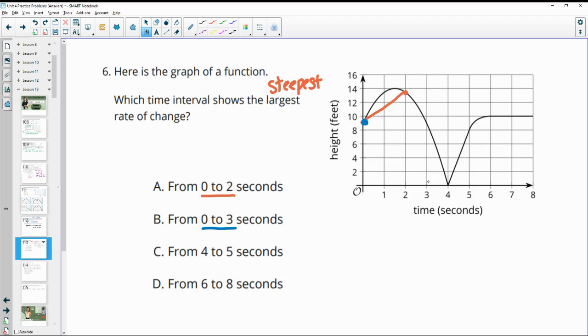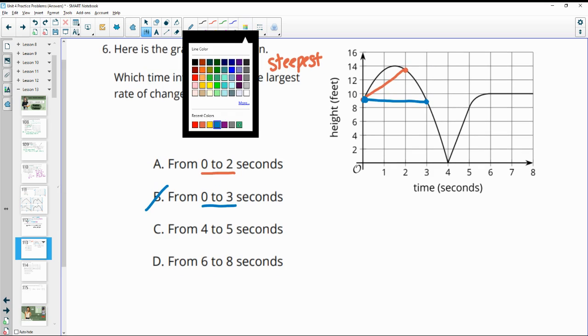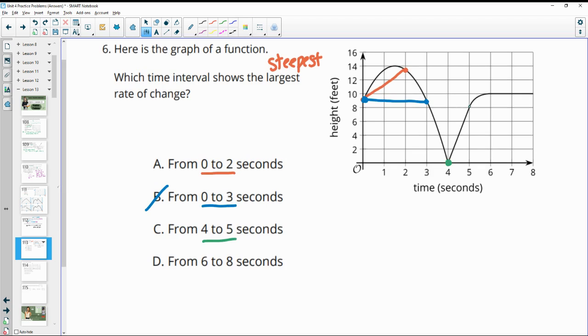So from zero to three seconds, there's where it is at zero, here's where the graph is at three. Connect those. So that one's already less steep than the first one, so I'll cross that off. From four to five seconds, here's four, here's five, and that is definitely steeper than the orange one. So I'll cross A off. And then D says from six to eight seconds. Here's six, here's eight. That just stays constant. So that is the least steep slope you could have. So that means that it is the steepest or the largest rate of change from four to five seconds.